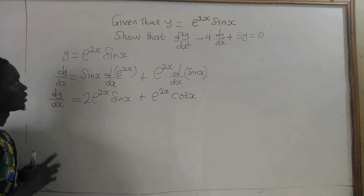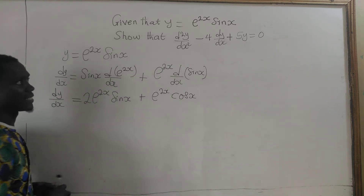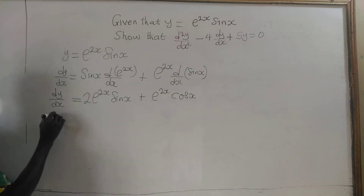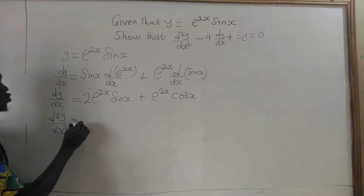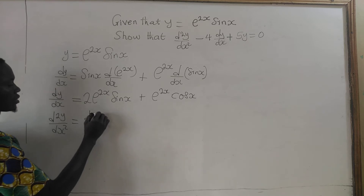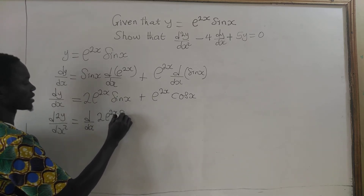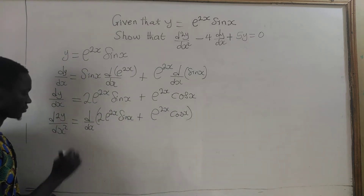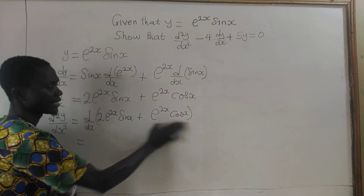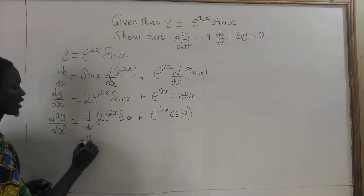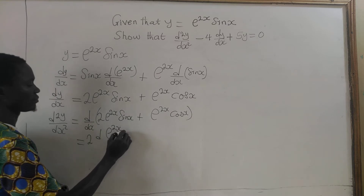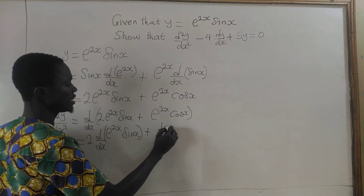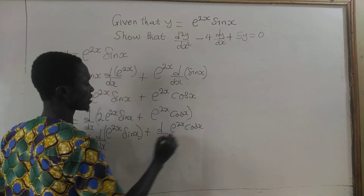Now we have to find the second derivative because the expression contains d²y/dx². So d²y/dx² is equal to the derivative of [2e^(2x)·sin(x) + e^(2x)·cos(x)] with respect to x. We are going to differentiate each term. Since 2 is a constant, we factor it out and write the derivative of e^(2x)·sin(x) plus the derivative of e^(2x)·cos(x), each with respect to x.